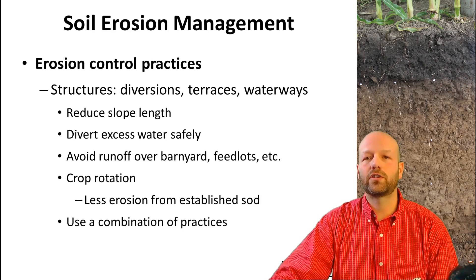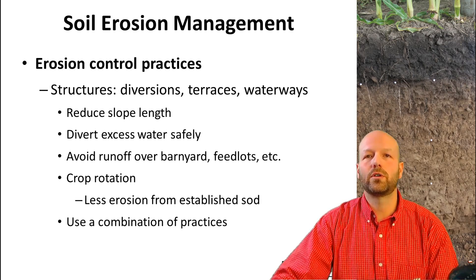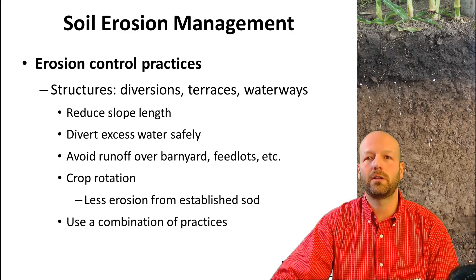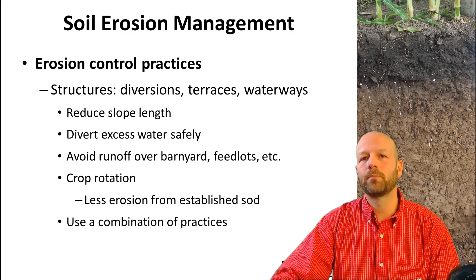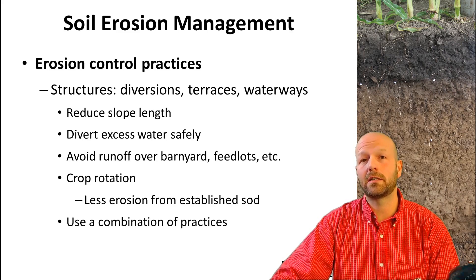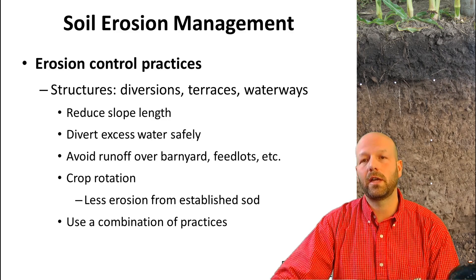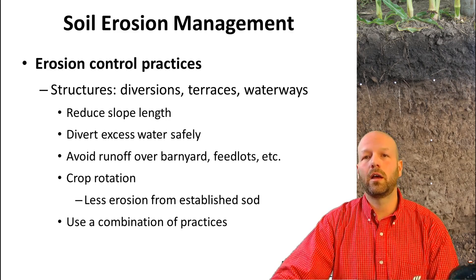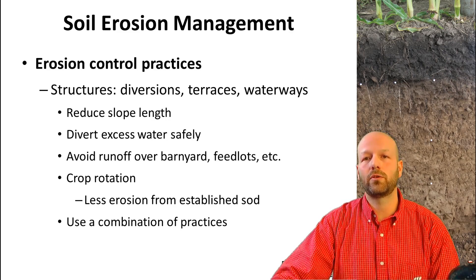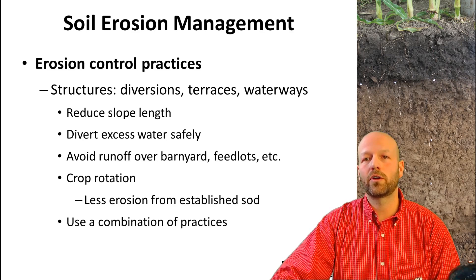Other structures used for erosion control include diversions, terraces, and waterways. Thinking back to the USLE equation, these practices aim to modify the LS factor — the slope. They work to reduce slope length and divert water more safely, avoiding any confluence of water or concentrated flow.